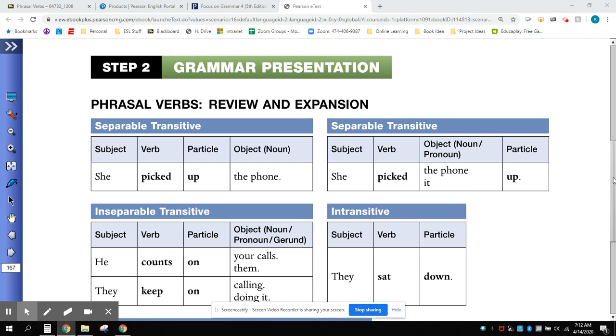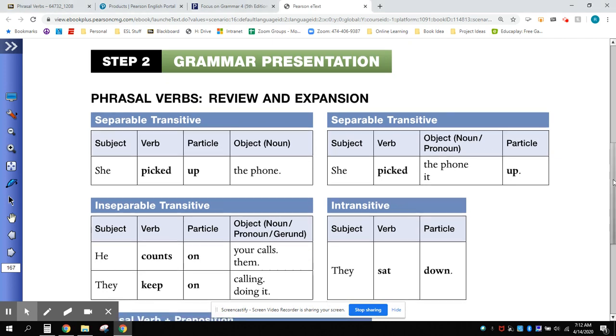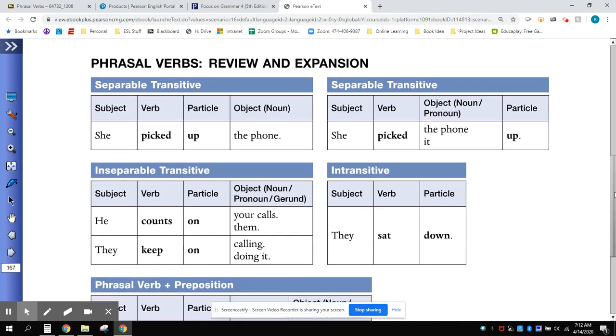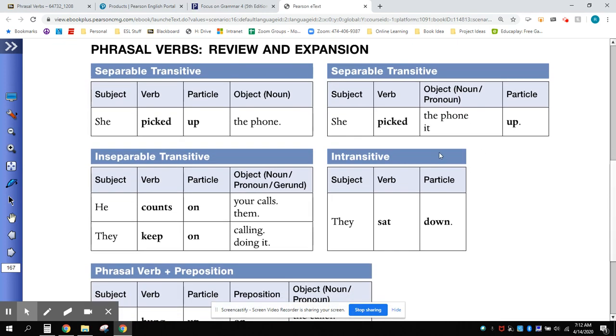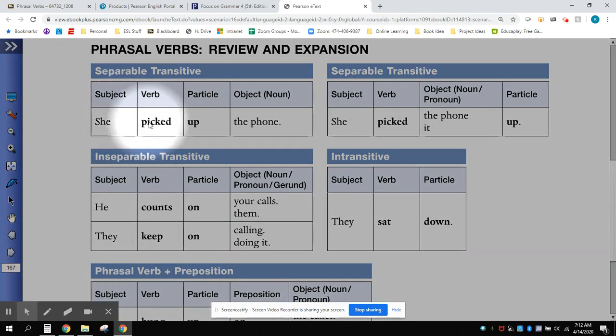Phrasal verbs are often called two-word verbs and sometimes three-word verbs when they are followed by a specific preposition. A phrasal verb consists of a verb and a particle. The verb by itself is changed in meaning when it has a particle.